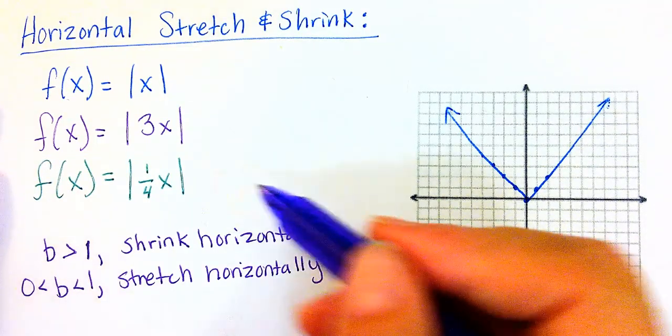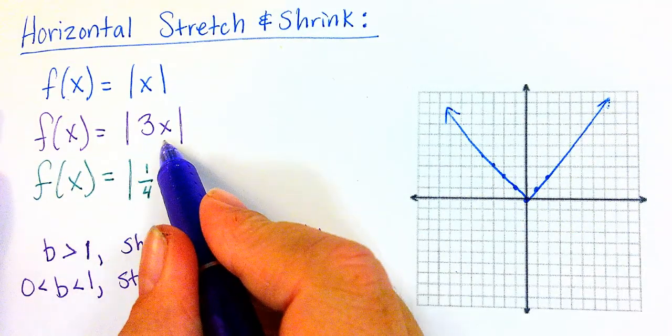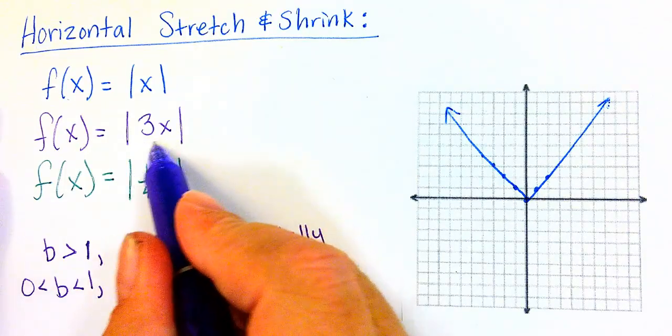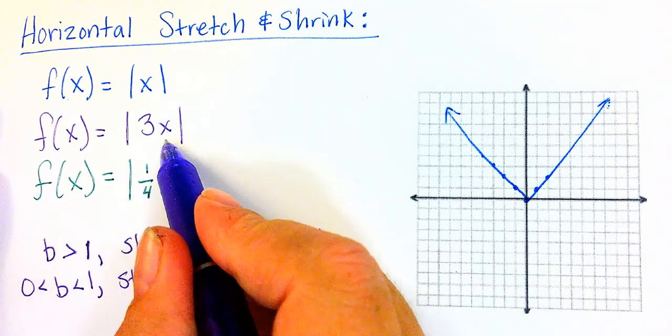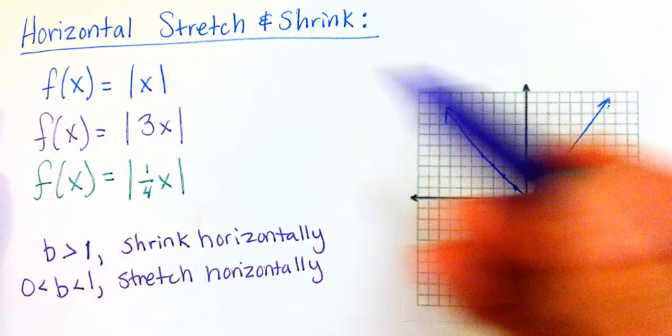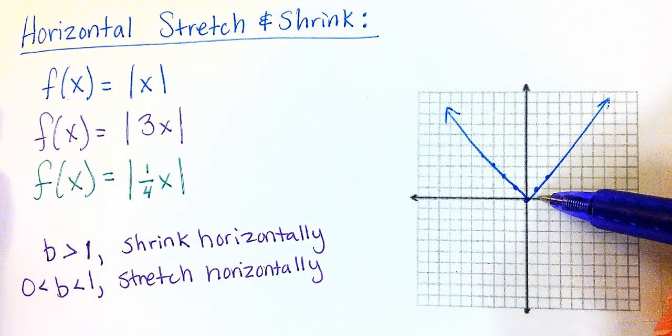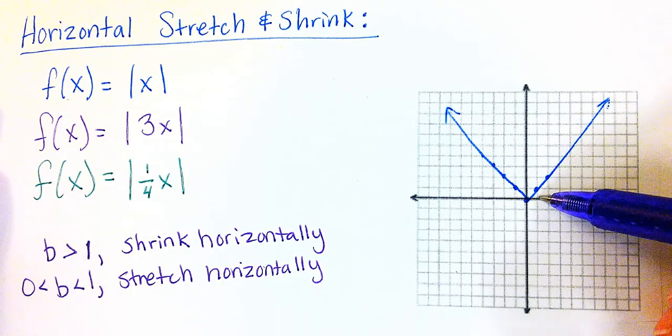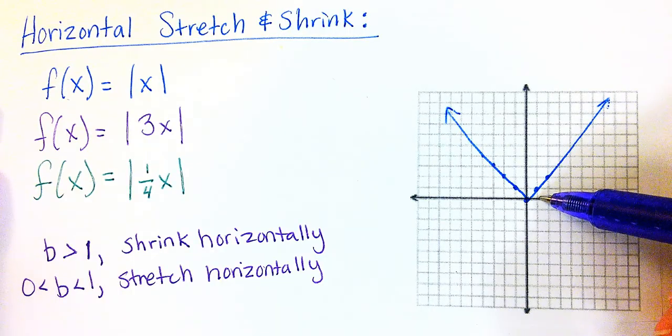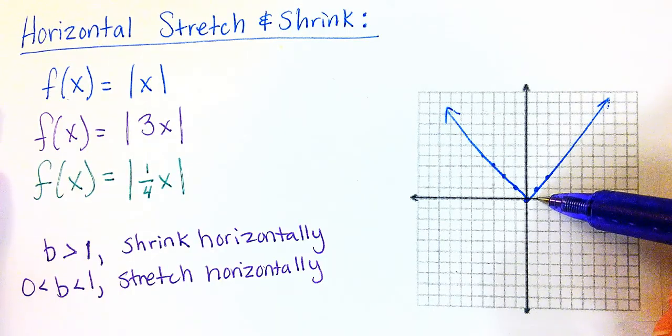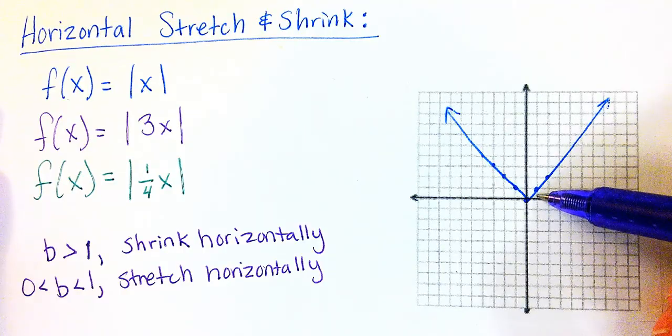Now let's look at the absolute value of 3x. So what happens here to the graph when we have absolute value of 3x? So if we have a number, let's say 1, then 1 times 3 is 3 and the absolute value of 3 is also 3. So now we have 3.